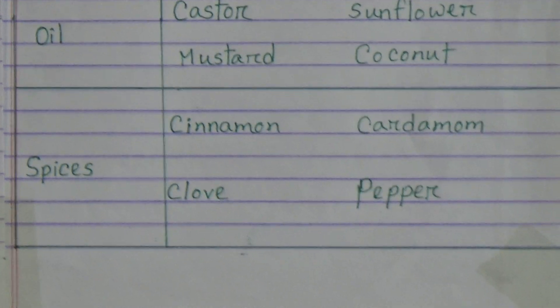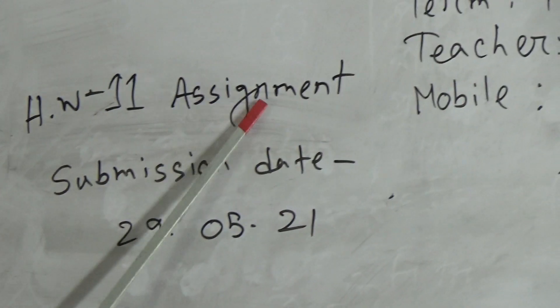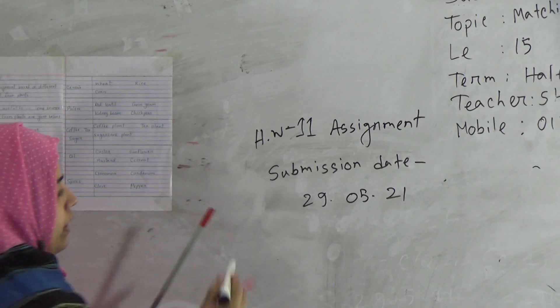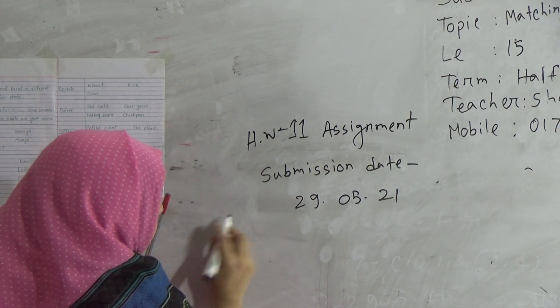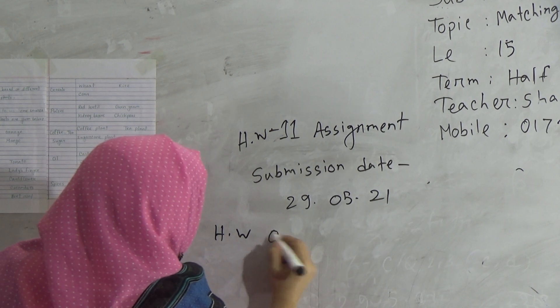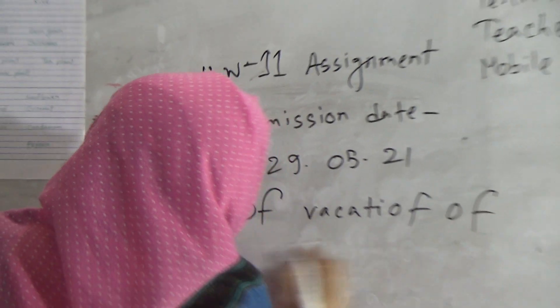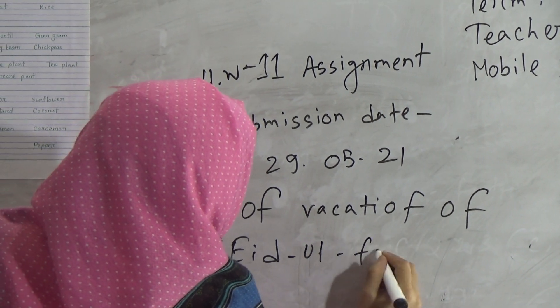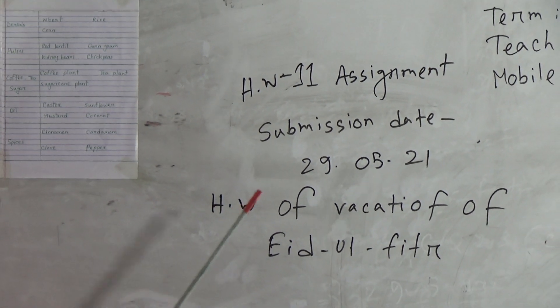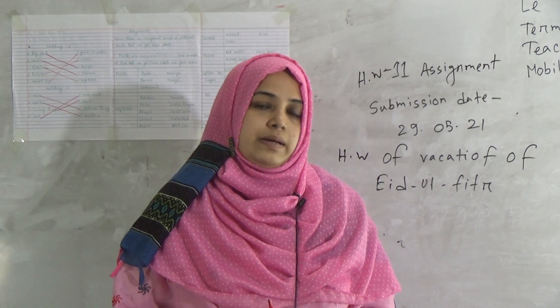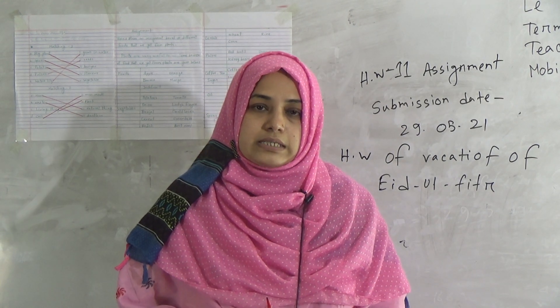My dear students, you have to do this assignment on A4 size offset paper. This is your HW number 11 and your topic is the assignment. The submission date is 29-5-21. I hope all of you have understood today's topic. Do your HW properly and submit it on time. See you again in the next class. Allah Hafiz.